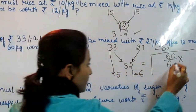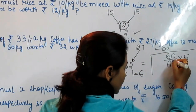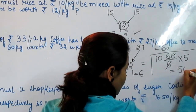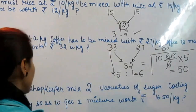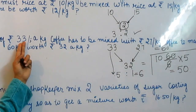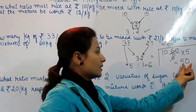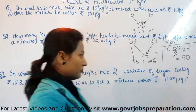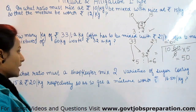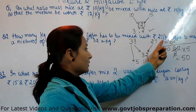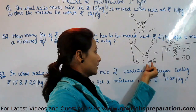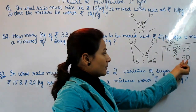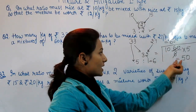Solving it: (5/6) × 60 = 50 kg. The answer is 50 kg of Rs. 33 coffee. For Rs. 27 coffee: (1/6) × 60 = 10 kg. So 50 and 10 together make our mixture of 60 kg.